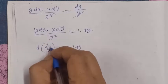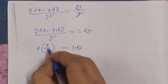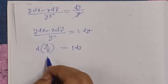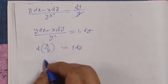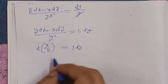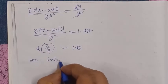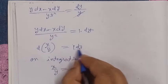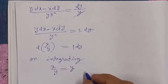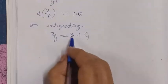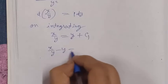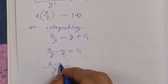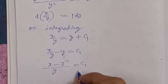Applying the differentiation and then integration, the left-hand side gives x upon y. On the right-hand side we integrate with respect to the variable and add the constant of integration. Transposing to the left-hand side, x upon y minus y is equal to C. This gives us equation number two: x minus y squared upon y equals C₁.